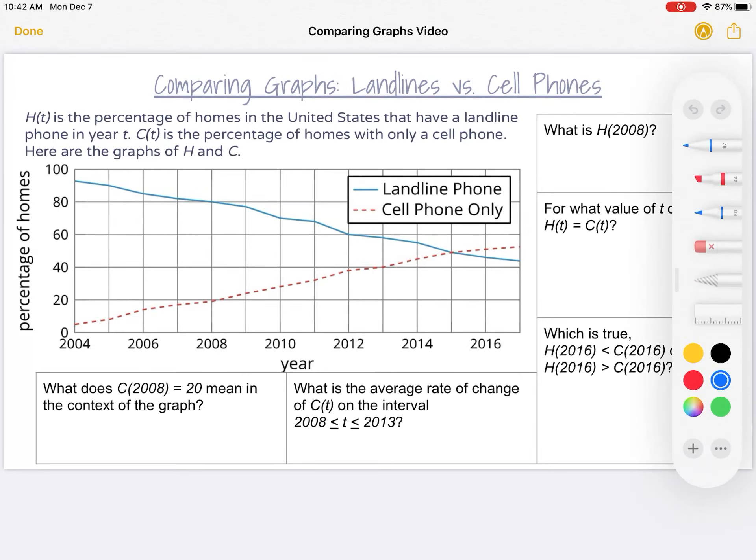I'm going to start by just making sure I know exactly which line to look at when I'm looking at H(t) versus C(t). So H(t) is the people that have a landline phone. In my graph, the key tells me the landline phone is the solid blue line. C(t) is the percentage of homes with only a cell phone, which is the dotted red line. I'm going to label both so that I don't forget which graph to look at.